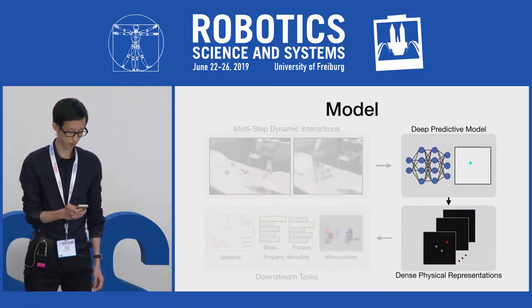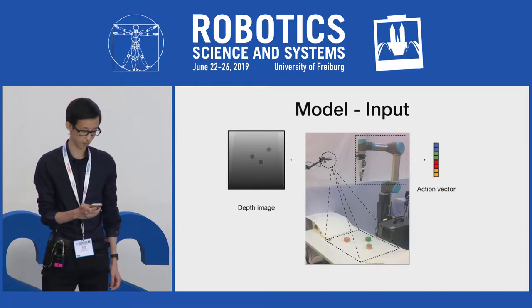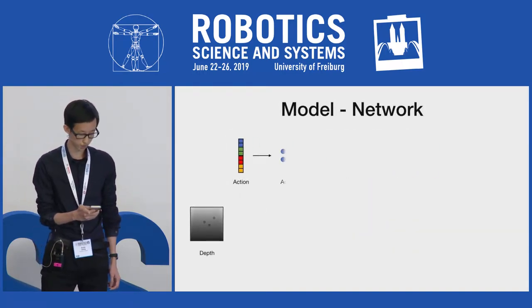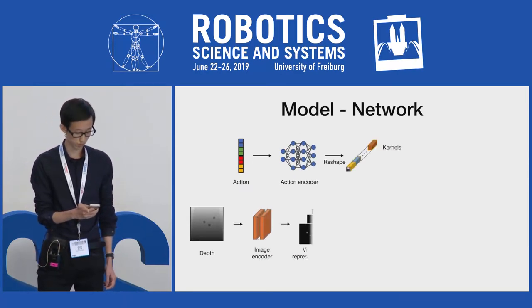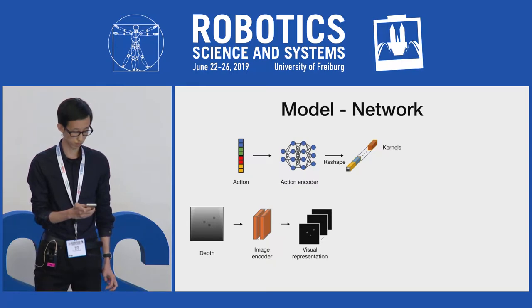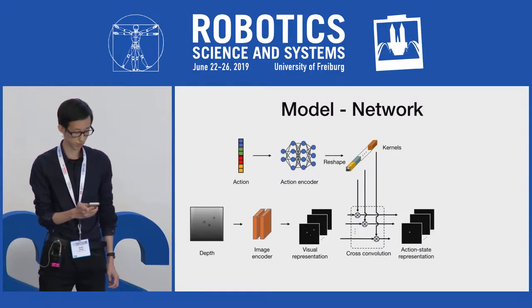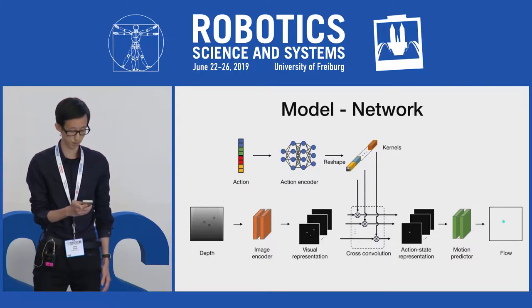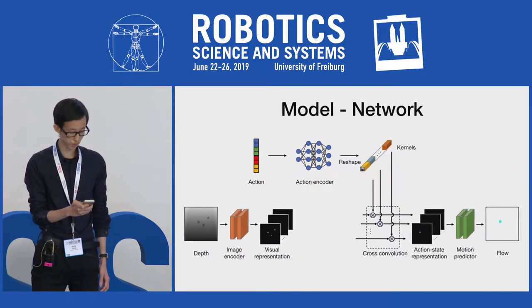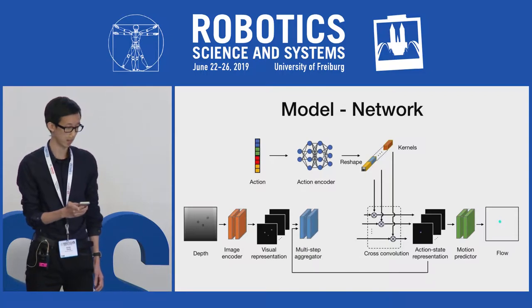Here are the details of our model. Our model takes as input the current state modeled as a depth image and an action vector. The action vector is fed through an encoding network that generates a set of convolutional kernels. Simultaneously, the depth is passed into another network that extracts visual signals and outputs a visual representation. The two representations are combined with cross-convolution to generate a state-action representation, which is then fed into a motion predictor network to predict the change in state represented by pixel-wise optical flow. To aggregate information from past interactions, the multi-step aggregator learns to integrate the visual representation with the object representation after the last interaction.